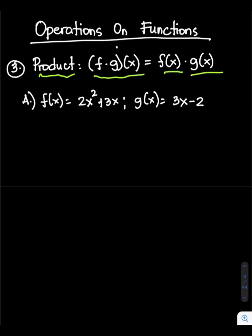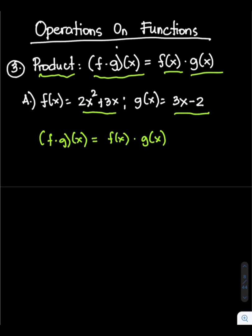For example, if we have f of x equals 2x squared plus 3x, and g of x equals 3x minus 2, find the product of the given functions. The formula is: the quantity of f times g of x equals f of x times g of x. Substitute the values.